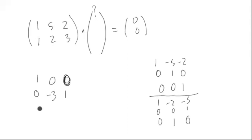And interchanging these, we get a one, zero, zero, and a zero, one, negative three. Great.